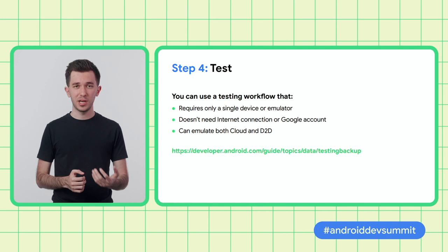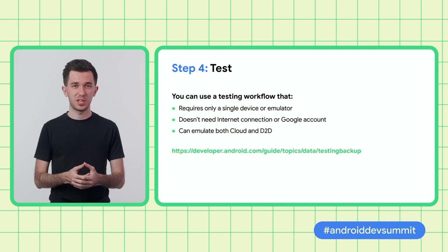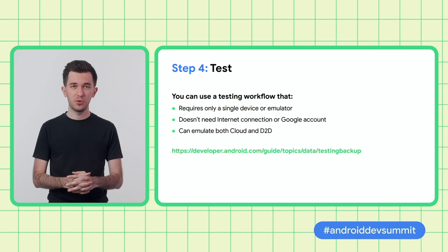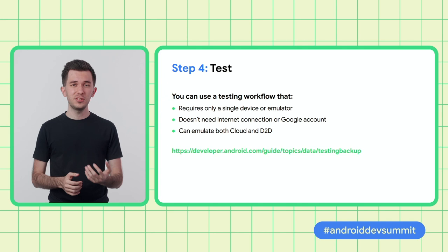Once you've configured everything as you like, whether it's auto-backup or key-value backup, it's very important to do some testing to make sure you're getting the behavior you want when your app is launched for the first time after a restore. Testing is very easy with a special workflow that lets you emulate both cloud and device-to-device transfers for your app specifically, using just a single device or emulator. You can find detailed instructions by following the link on the slide.